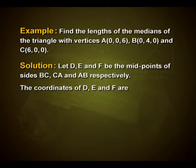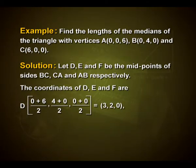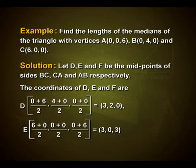Point D (midpoint of BC) = (0+6)/2, (4+0)/2, (0+0)/2 = (3, 2, 0). Point E (midpoint of CA) = (6+0)/2, (0+0)/2, (0+6)/2 = (3, 0, 3). Point F (midpoint of AB) = (0+0)/2, (0+4)/2, (6+0)/2 = (0, 2, 3).